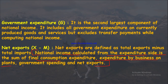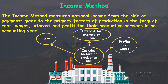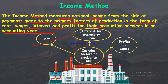Now let's move on to the very important income method. The income method measures national income from the side of payments made to the primary factors of production — in the form of rent, wages, interest, and profits — for their productive services in an accounting year.